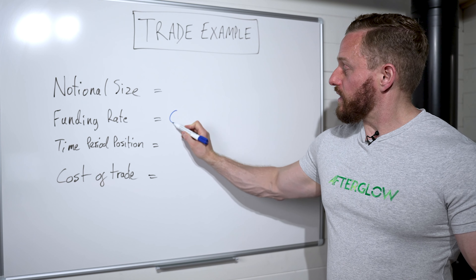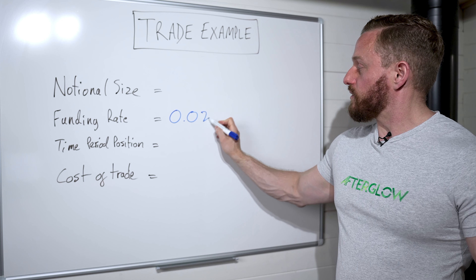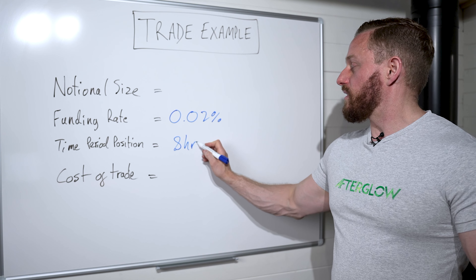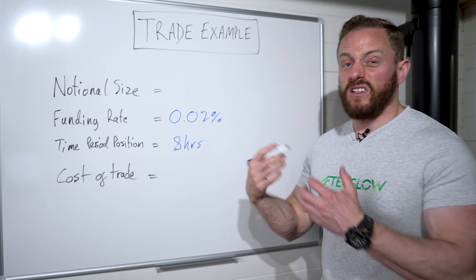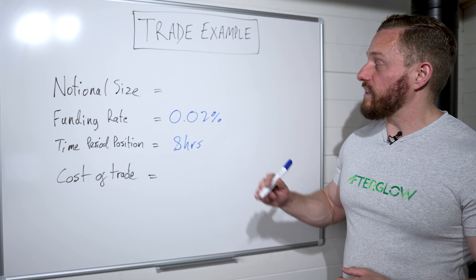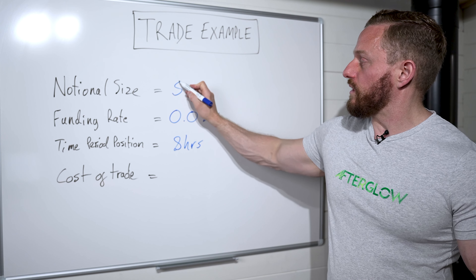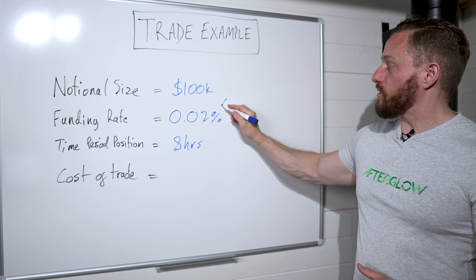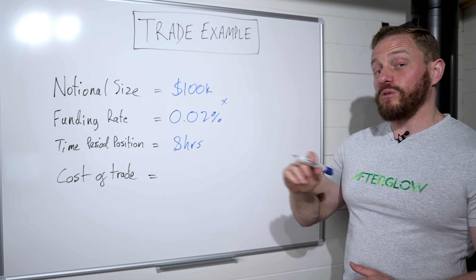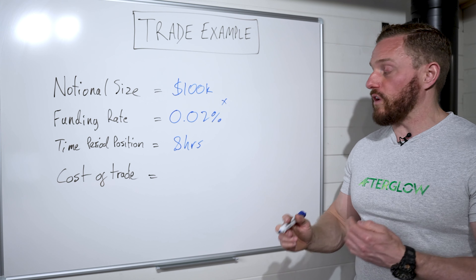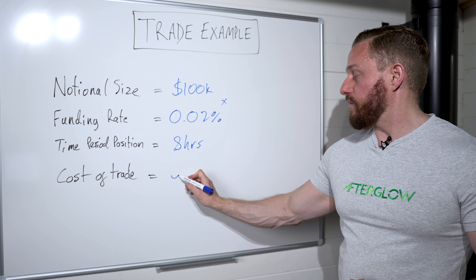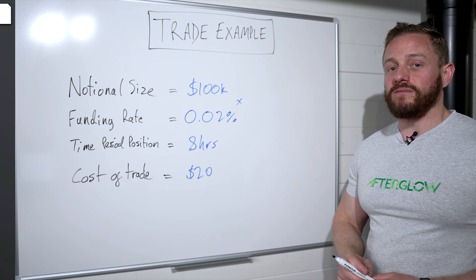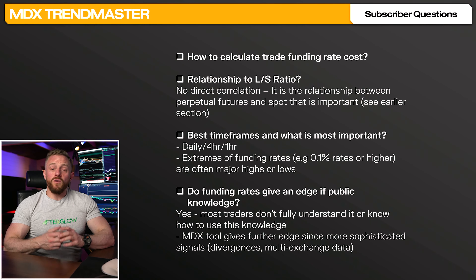If the funding rate is 0.2% every eight hours, and for simplicity let's say we held the trade for eight hours with a notional trade size of $100,000, then we just multiply — that gives a funding rate cost to hold that trade of $200 every eight hours. Wait, let me correct that: 0.2% of $100,000 equals $200. The next question is: what is the relationship to the long and short ratio?